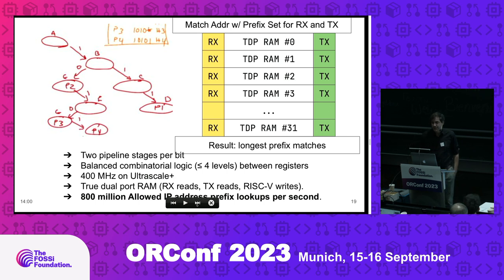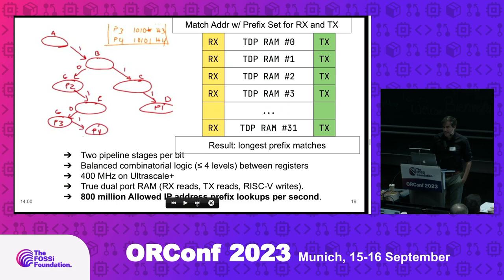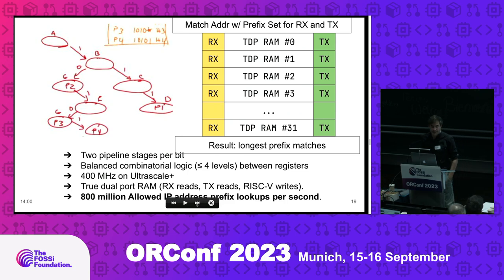For any FPGA that has a true dual-port RAM — most high-end FPGA devices do — we can reach 400 megahertz on an UltraScale+. We went from 13 levels of logic to four levels between the registers, meaning we can do two times 400 million lookups per second — 800 million lookups per second.